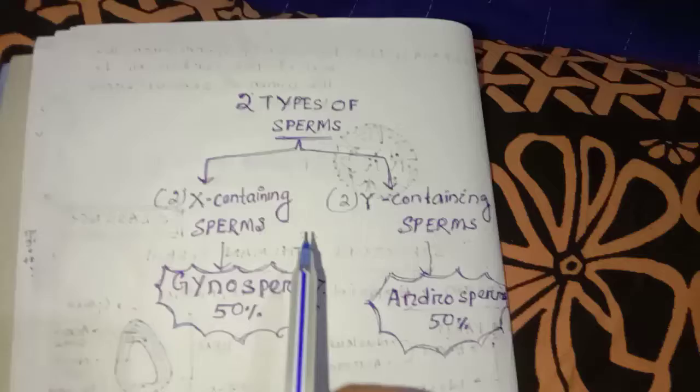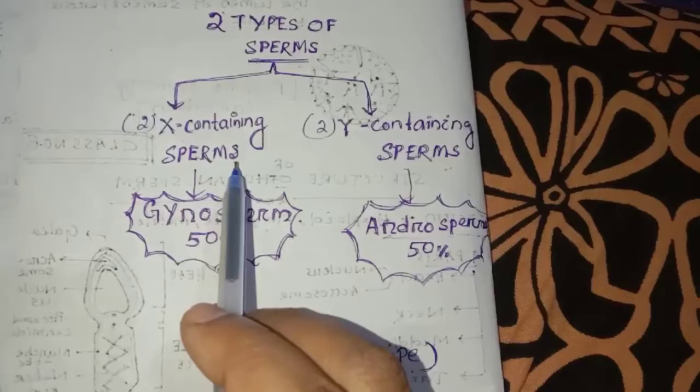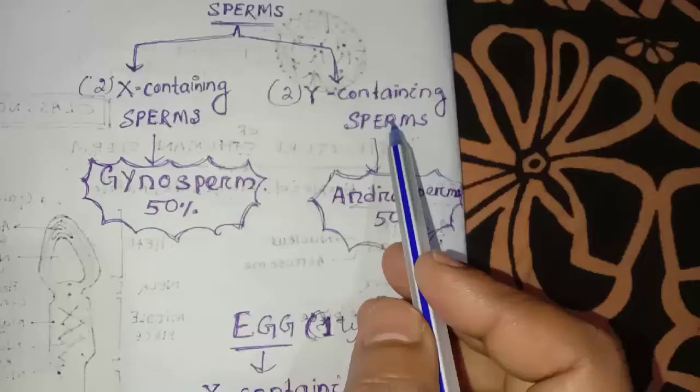X-containing sperm are called gynosperm and Y-containing sperm are called androsperm. Gynosperm and androsperm are produced in a 50-50 percent ratio.